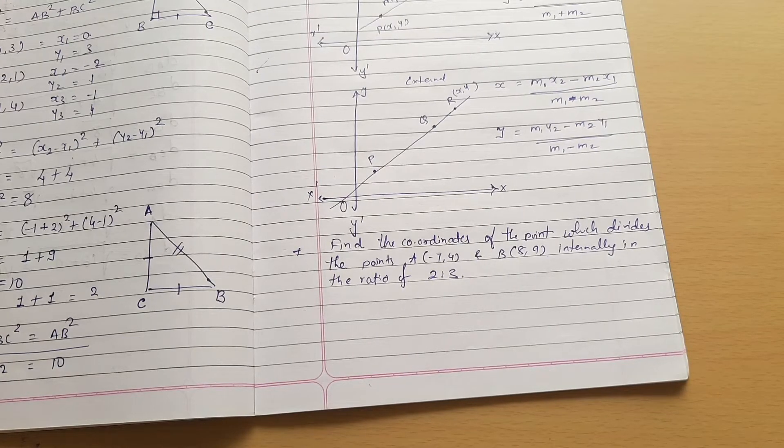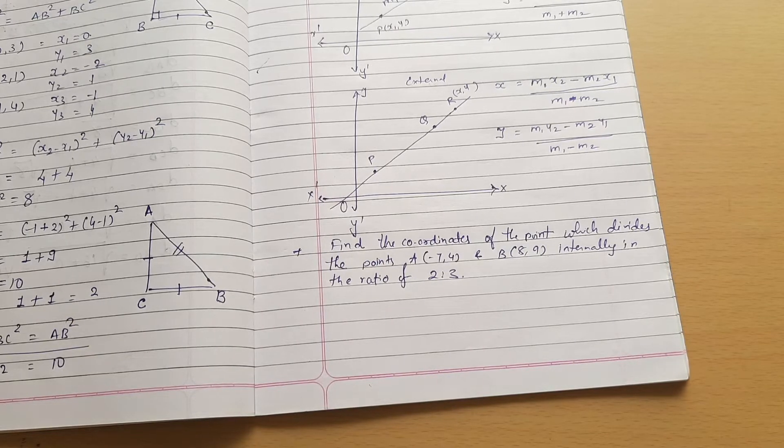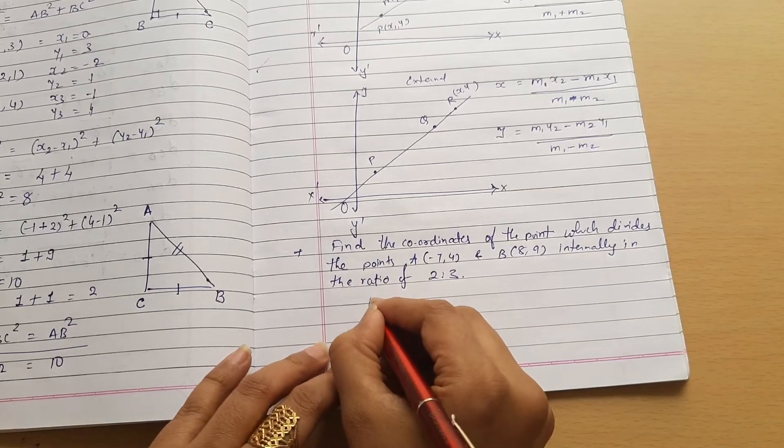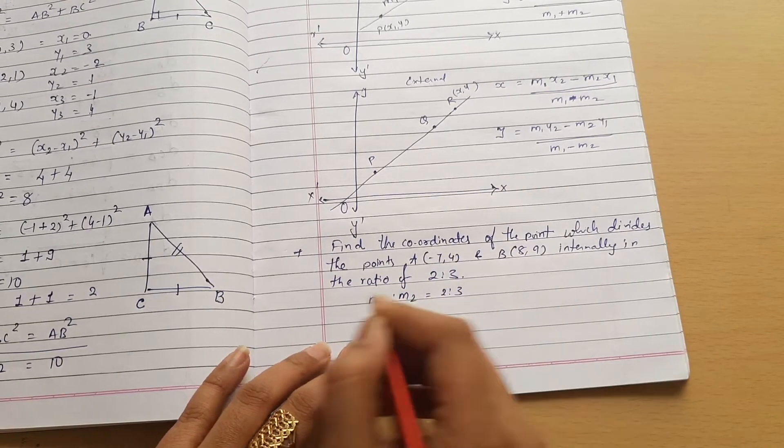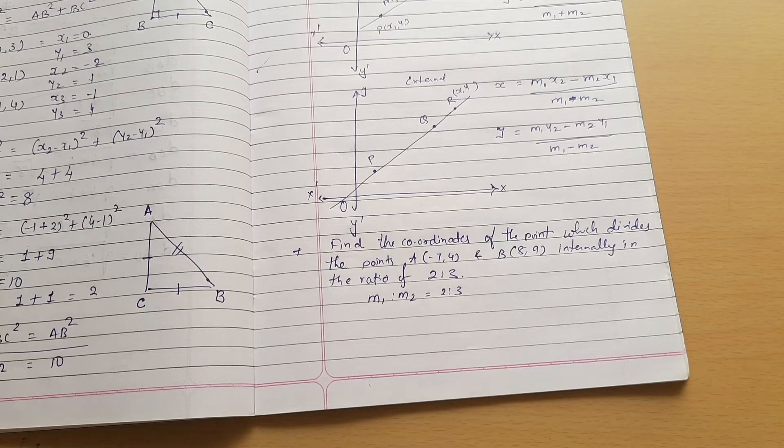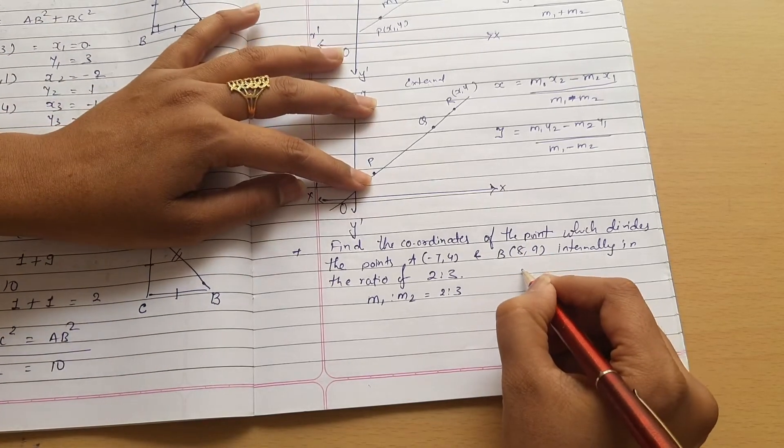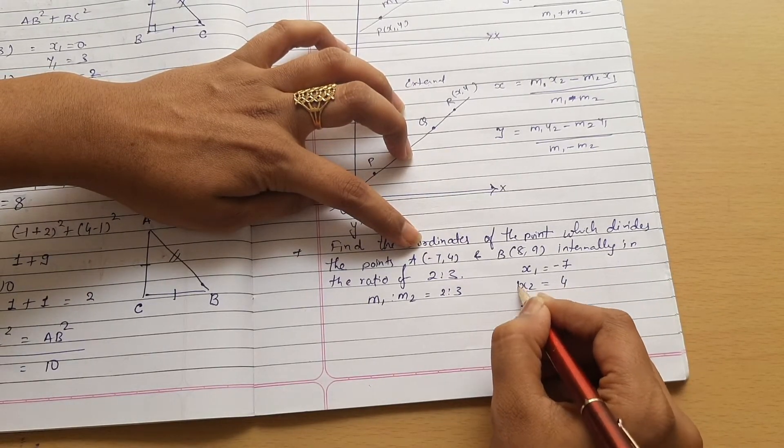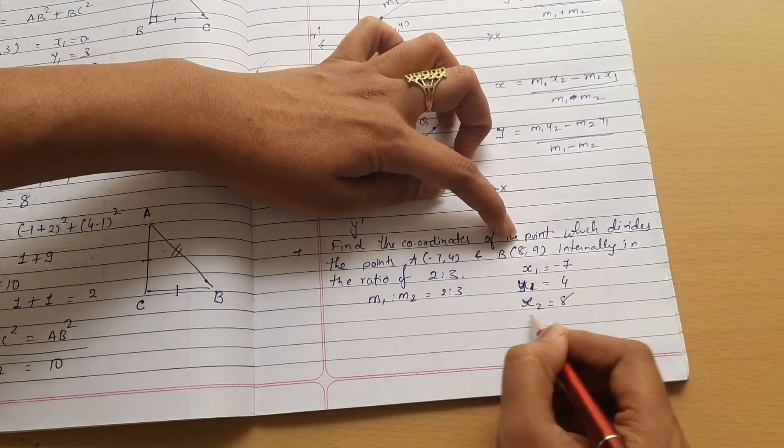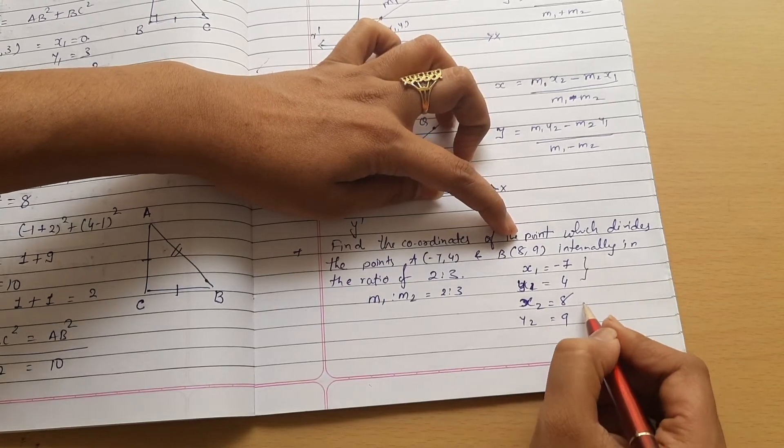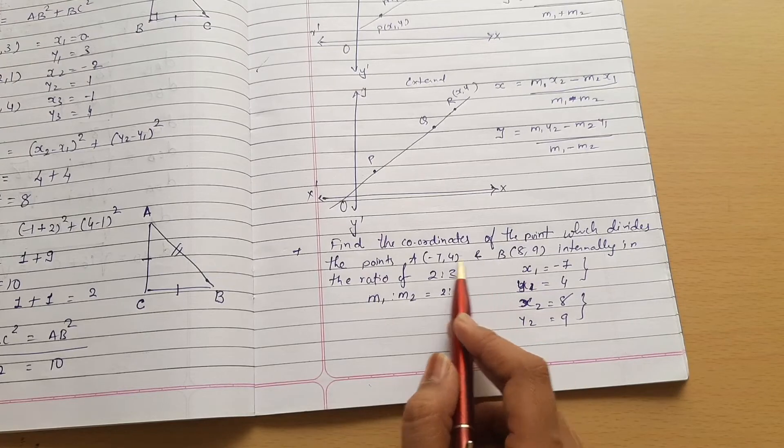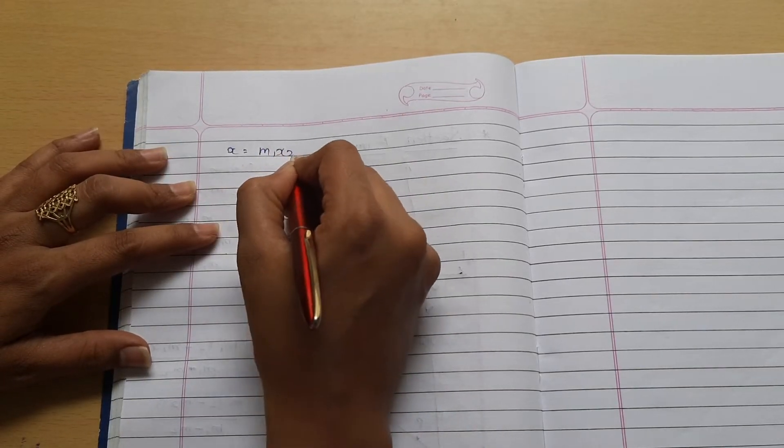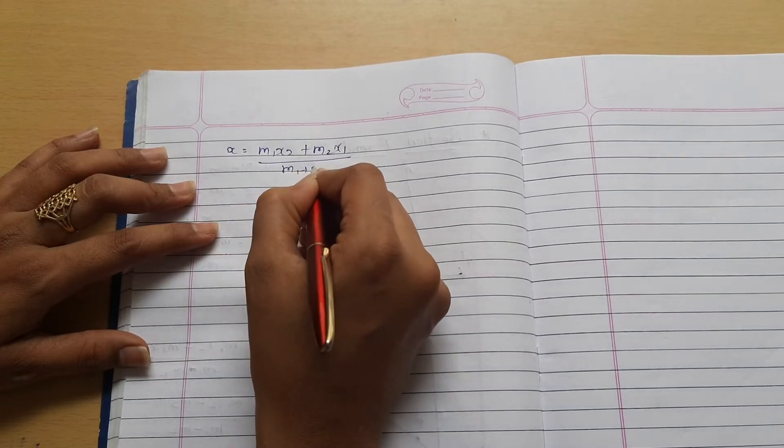The question is: find the coordinates of the point which divides the points A and B internally in the ratio of 2:3. The ratio m1:m2 equals 2:3. So m1 equals 2 and m2 equals 3. The two points given are x1 equals minus 7, y1 equals 4, then x2 equals 8 and y2 equals 9. Since it divides internally, x equals m1 x2 plus m2 x1 divided by m1 plus m2.